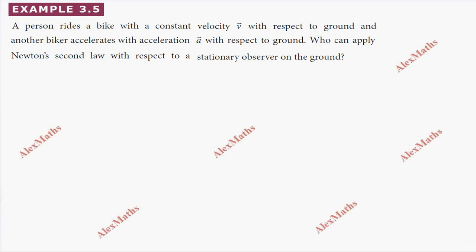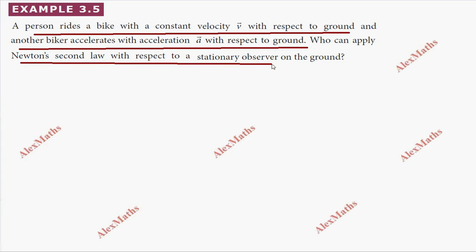Hi students, this is Alex. Here's a problem: a person rides a bike with constant velocity v with respect to ground, and another biker accelerates with acceleration a with respect to the ground. Who can apply Newton's second law with respect to a stationary observer on the ground?